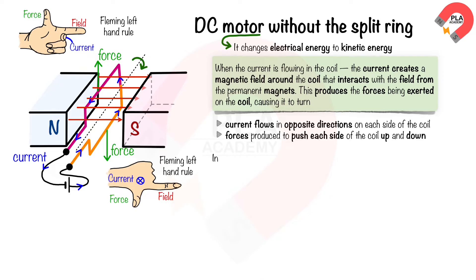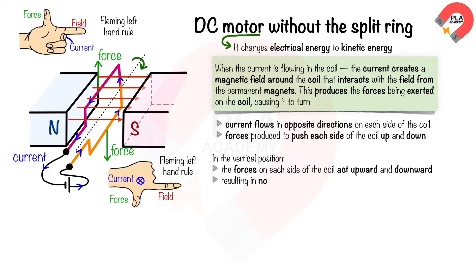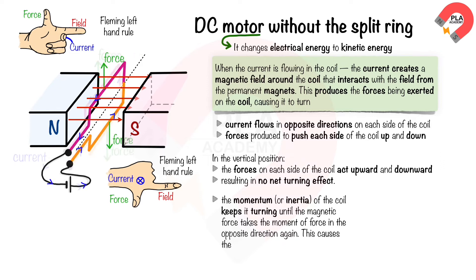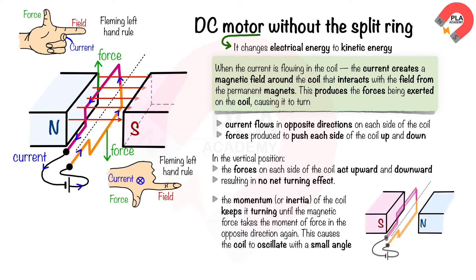In the vertical position, the magnetic forces on each side of the coil act upward and downward, canceling each other out, resulting in no net turning effect. However, the momentum or inertia of the coil keeps it turning until the magnetic force takes the moment of force in the opposite direction again, causing the coil to oscillate with a small angle.